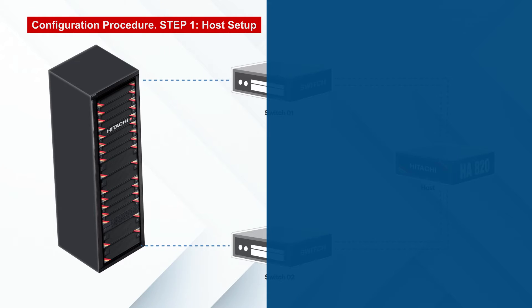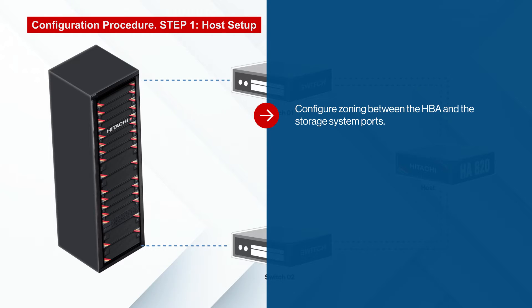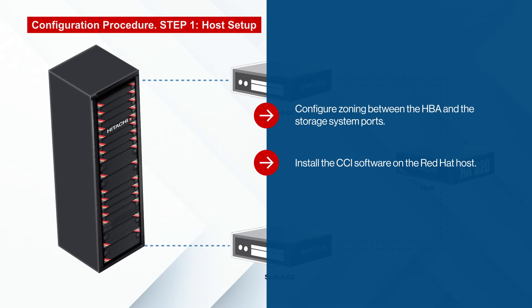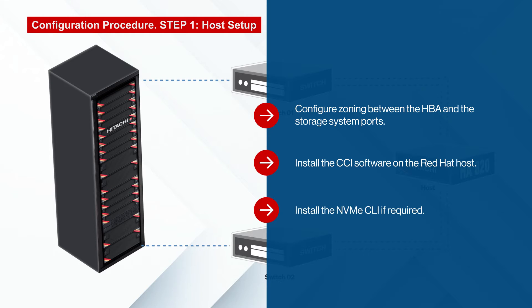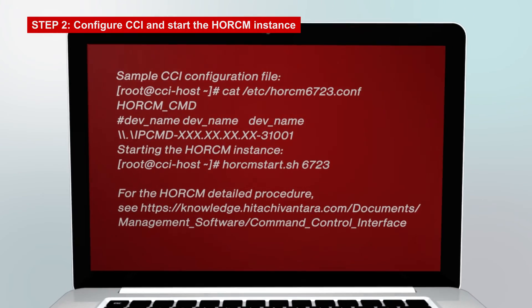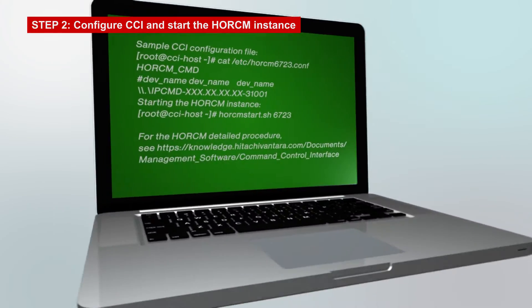The first step is to set up the host. For the purposes of this video, we assume that you've already configured zoning between the HBA ports and the storage ports. The first thing we'll do is install the CCI software on the host. Then, if it's not already installed, we install the NVMe CLI.